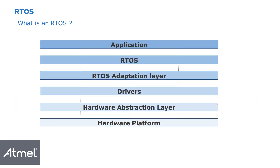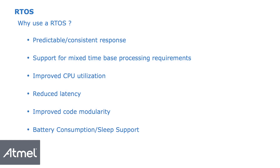An RTOS sits between the application and the lower level devices. We have drivers we'd like to share, most often the serial devices, as well as the underlying hardware itself. An RTOS allows applications to share resources without getting in each other's way. It provides a predictable, consistent response, improves CPU utilization, and allows for better latency and performance. Interestingly, it also allows for lower power consumption — you can manage the sleep state, manage when you come out, and determine what application requirements take place within any given quantum of when the application is running.